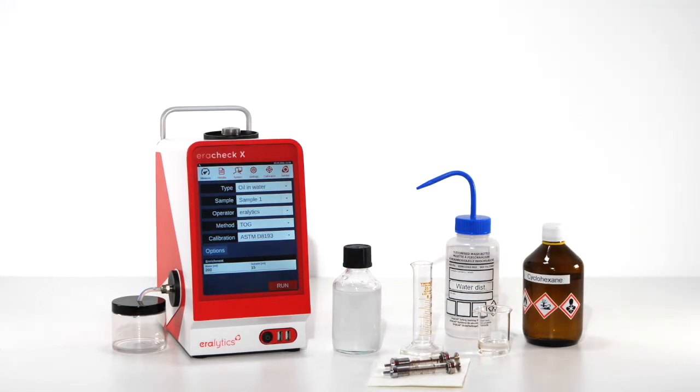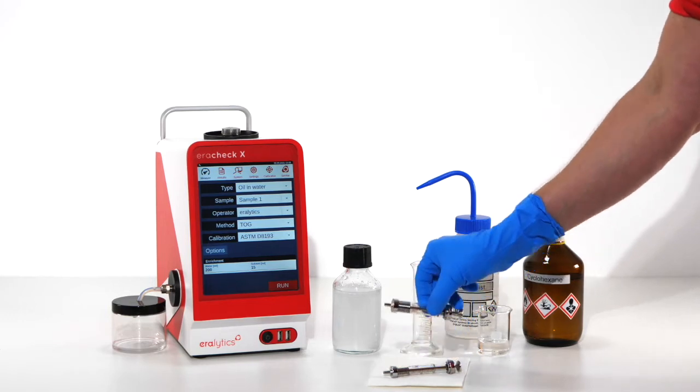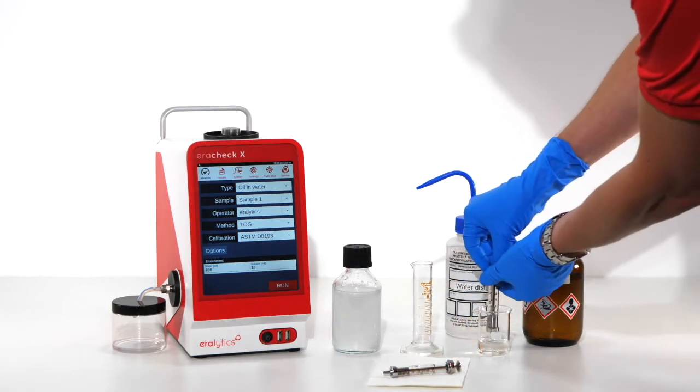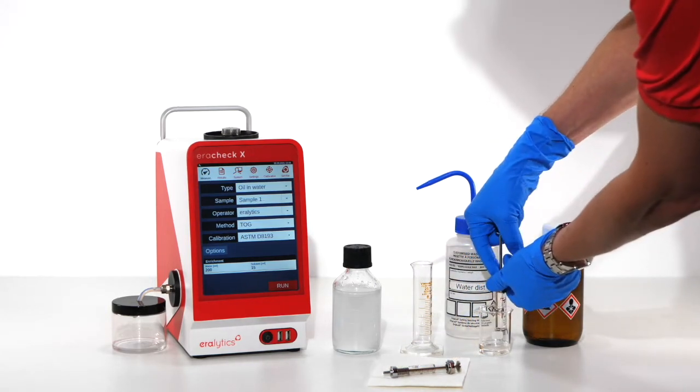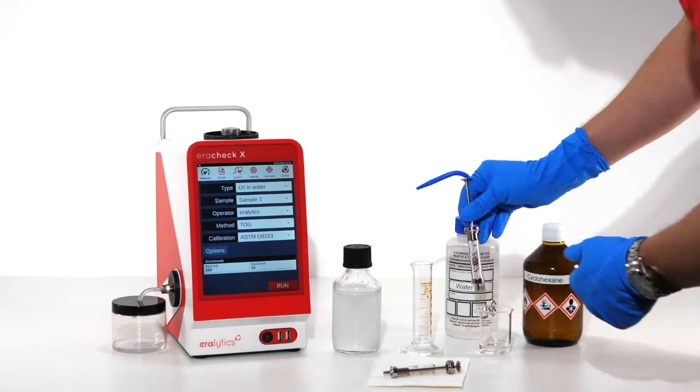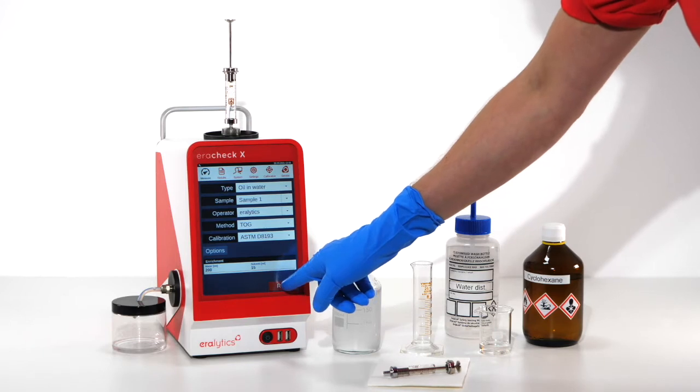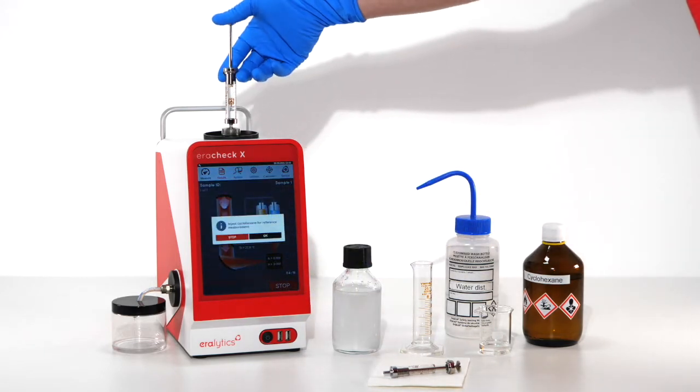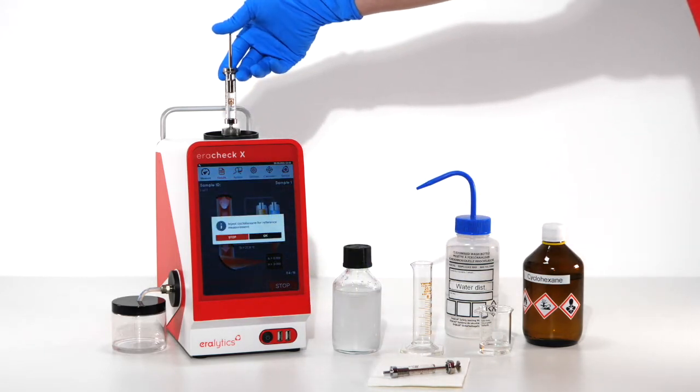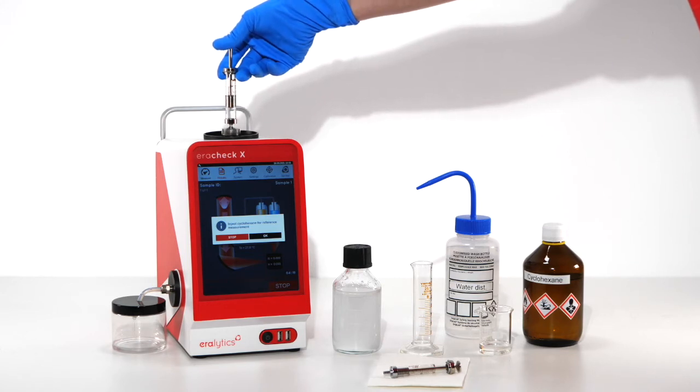In the meantime, use 5 ml of fresh cyclohexane for the background determination. Attach the syringe to the inlet assembly and start the reference measurement by clicking the run button. Slowly inject the cyclohexane into the analyzer and click OK on the screen.